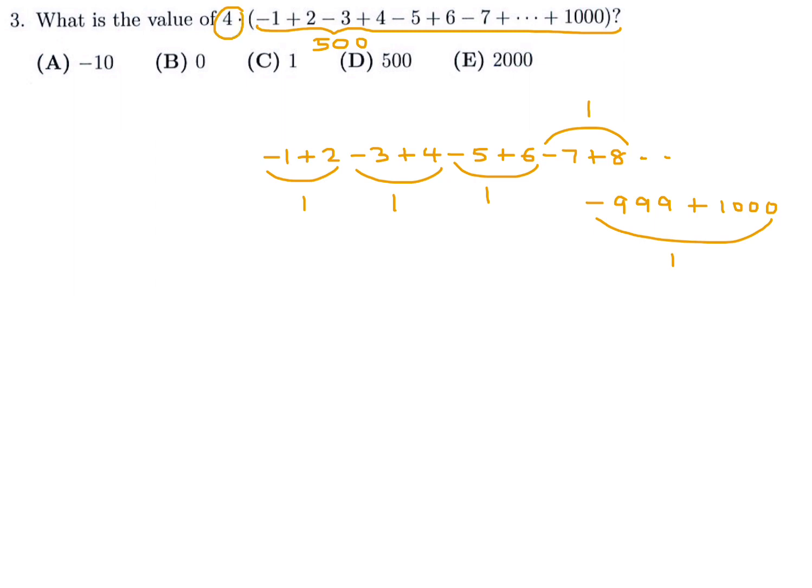Don't forget you have to multiply by 4. So 4 times 500 is 2,000. The answer to number 3 is E.